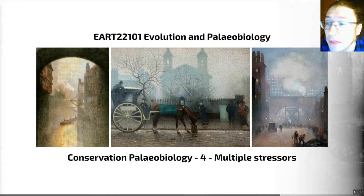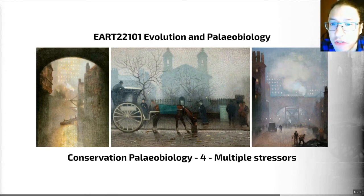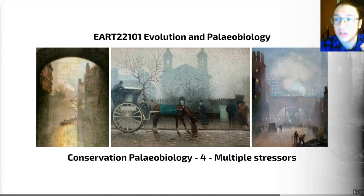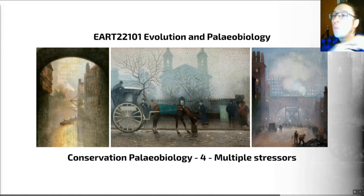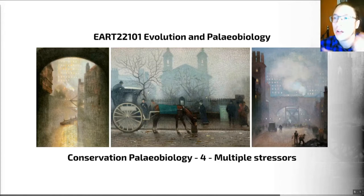This being the case, working out how stressors interact is really important. For example, does having two stressors just make things twice as bad, or does it make things 20 or 100 times as bad? We need to understand this if we're trying to understand the impact that we're having on ecosystems.